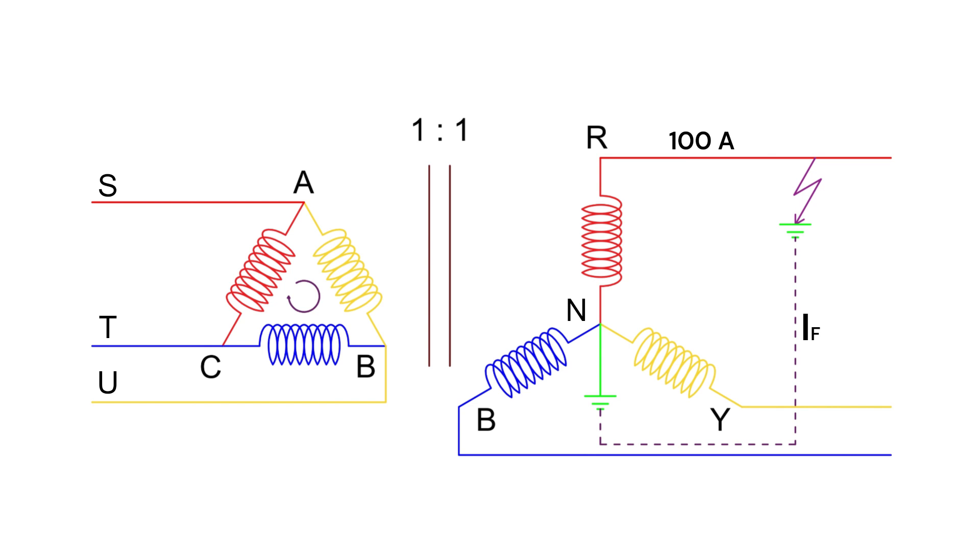Now, as 100 amperes flows in the Rn winding of the star side, the corresponding delta side winding AB also has 100 amperes flowing, as the voltage ratio is unity. The zero-sequence current component of I0 will circulate within the delta loop, so the line current in AS will be 100 minus I0 amperes, while the Rn winding in the star side still has 100 amperes. This results in a differential current of I0 amperes being sensed by the relay, causing it to trip even though the fault is outside the protected zone.